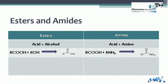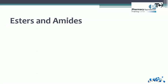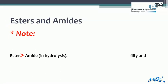If an ester is formed in a cyclic structure, it is called a cyclic ester or lactone. Similarly, if an amide is part of a ring structure, it is a cyclic amide or lactam — such as the beta-lactam ring, which is the backbone of all penicillins and cephalosporins. An important note: esters are more easily hydrolyzed than amides; amides are more stable than esters and have a longer duration of action.